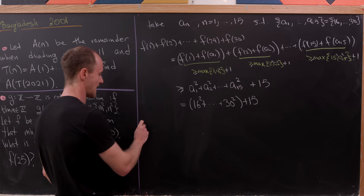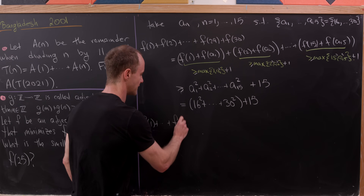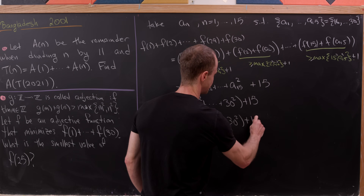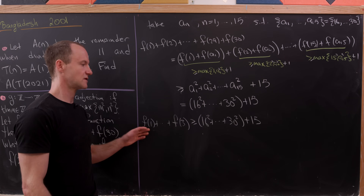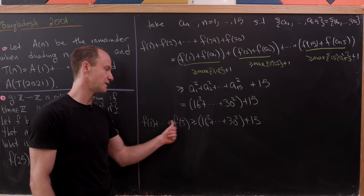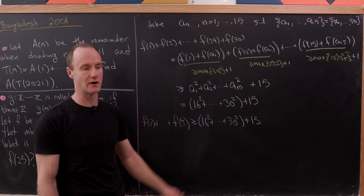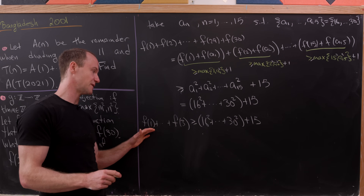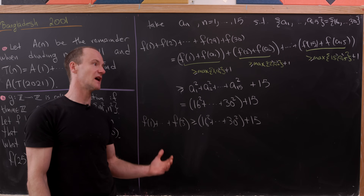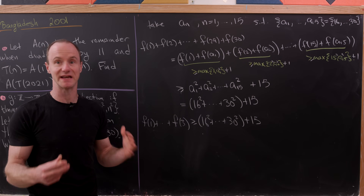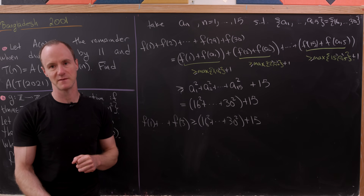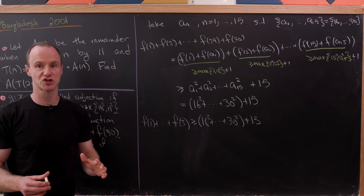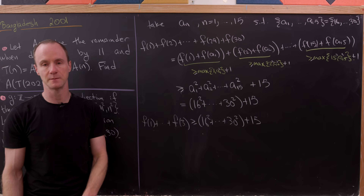We've just shown that f(1) + … + f(30) ≥ 16² + 17² + … + 30² + 15. Now we want to suppose we have a function achieving this minimum value and find the minimum value of f(25). But we're not done yet — we haven't shown such a function actually exists. We've only shown that if a function satisfies this minimum, we can proceed. We'll finish by constructing a function that achieves this minimum.